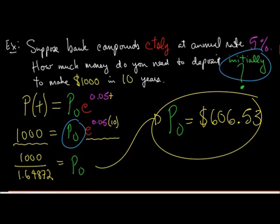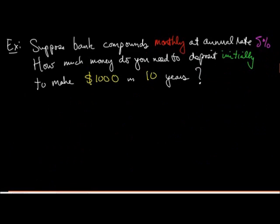Now let's switch it up a bit. Let's do the same problem, except now this bank is going to compound things monthly. Same stuff. You want to make $1,000 in 10 years. The annual rate is the same. And you still want to find out how much money do you actually have to deposit at this bank. So the only thing that changes is the function we use.